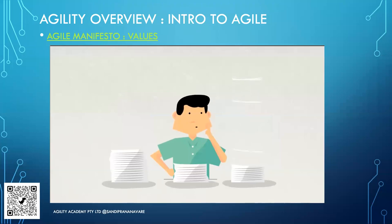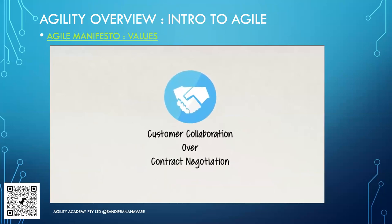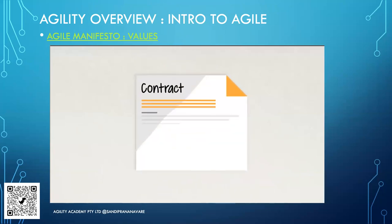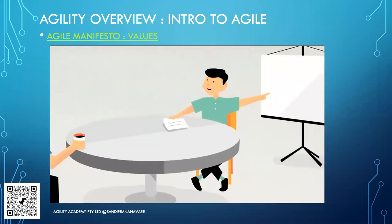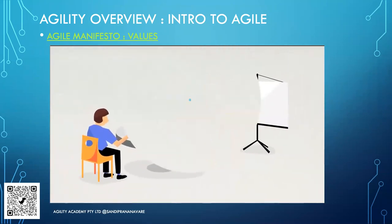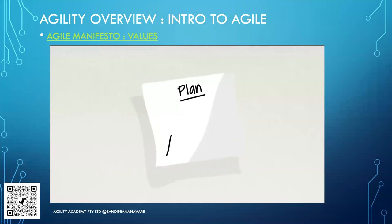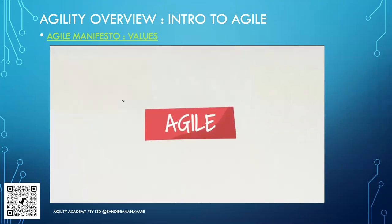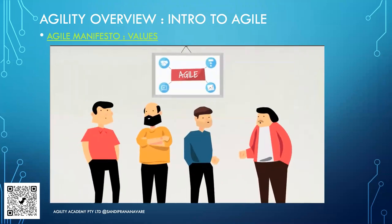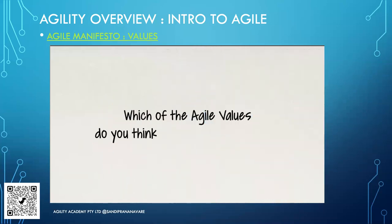Value two: working software over comprehensive documentation. Traditional development often produced extensive documentation before a program was released for testing. Value three: customer collaboration over contract negotiation — teams and customers should collaborate to find the best solutions rather than locking in exact details upfront. Value four: responding to change over following a plan. Nothing ever goes entirely according to plan, so it's more effective to make adjustments as your situation changes. When you build these values into your team's processes, the payoff is huge.